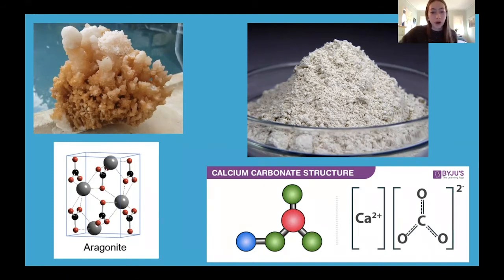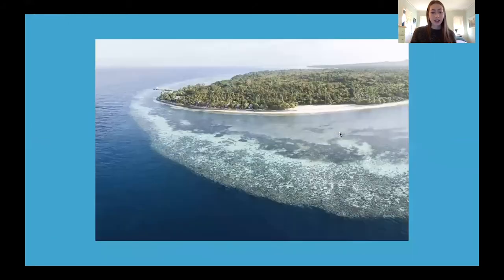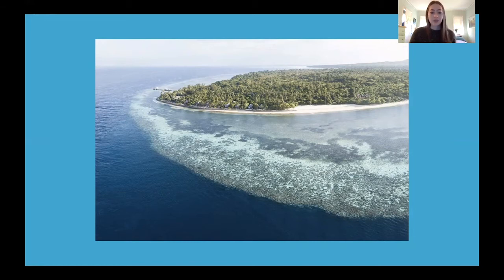These calcium carbonate skeletons connect with each other and begin to act as a single organism, and this is how reefs are formed. The colonies begin to connect with other colonies and form reefs. However, this takes a really long time — the fastest a coral can expand is 15 centimeters per year, so it's a very slow process.